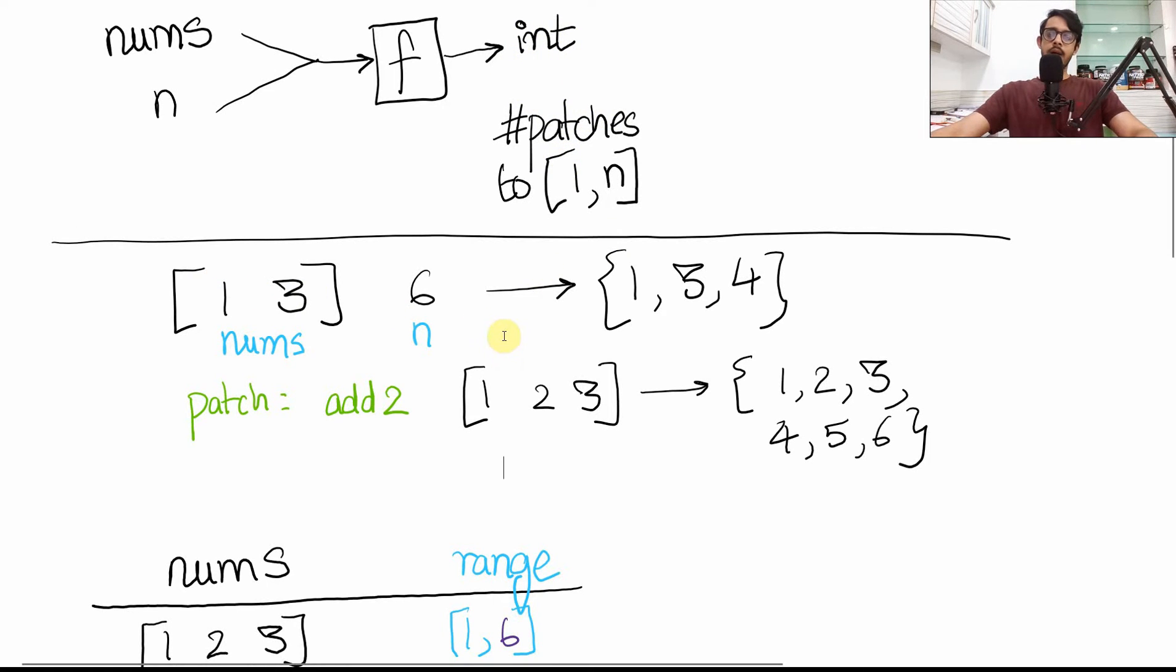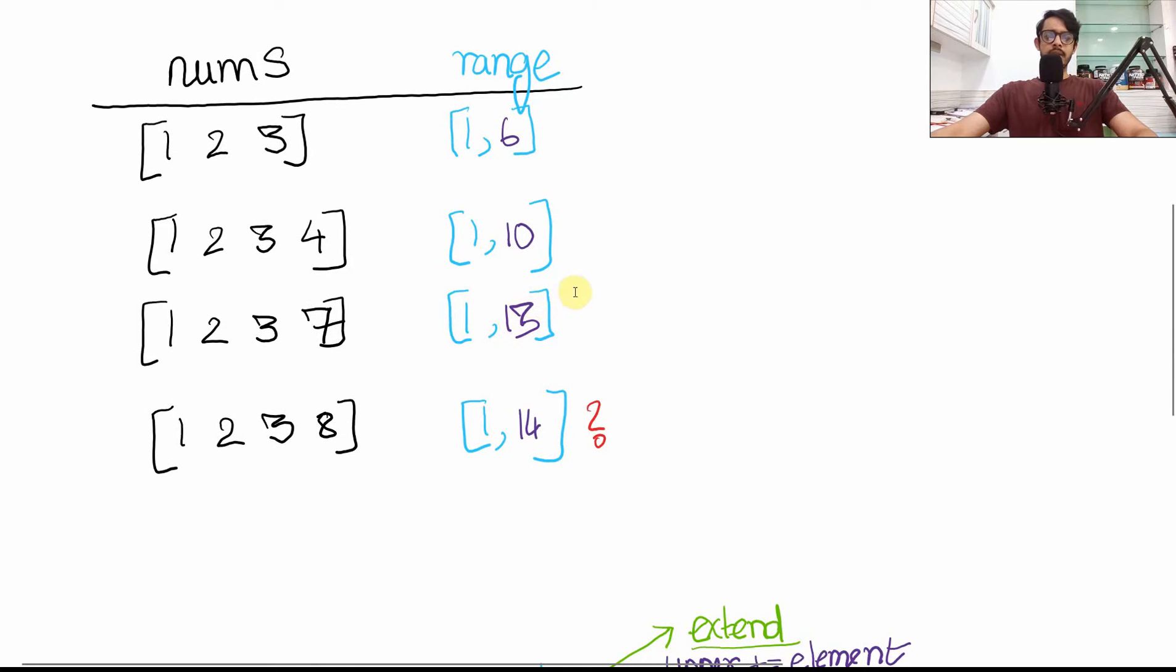Now let's look at a couple more examples and we'll forget about the patches part for now and understand the core observation behind this problem. We have the nums list [1, 2, 3] given this time. Now we want to discuss what the range of these nums is. Basically from start to the end, what is the contiguous range of elements it covers? Basically [1, 6] is just a mathematical notation meaning that we have elements one, two, three, four, five, and six. So [1, 2, 3] will have the range from one to six. [1, 2, 3, 4], you can pause the video and you'll find that the range is from one to ten.